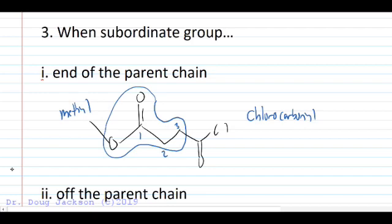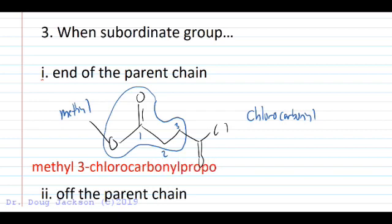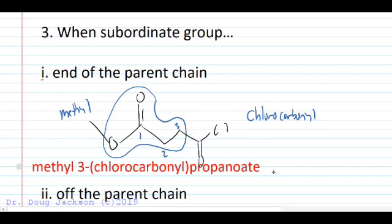As we talked about when we named esters, we would want to name that first group, the methyl attached to oxygen, first as its own word. Then we have a propanoate, but it is a 3-(chlorocarbonyl)propanoate. So methyl 3-(chlorocarbonyl)propanoate. We can separate the systematically named chlorocarbonyl group from the rest of the name with parentheses to make that clear.